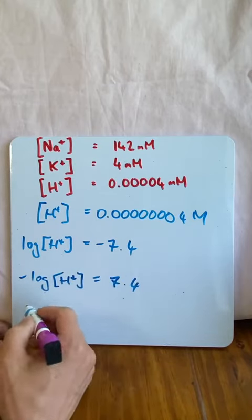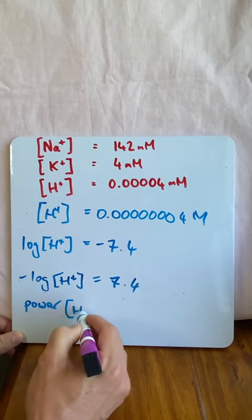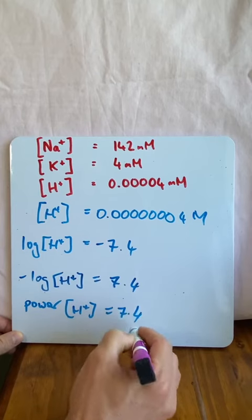Let's not write negative log. There's another way of writing negative log. You can write the power of it. The power of hydrogen ions is 7.4.